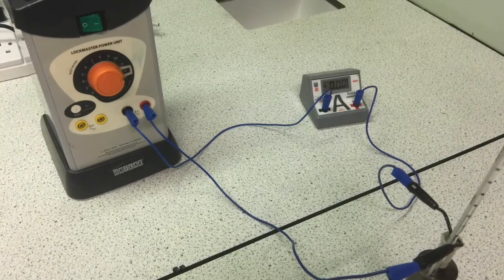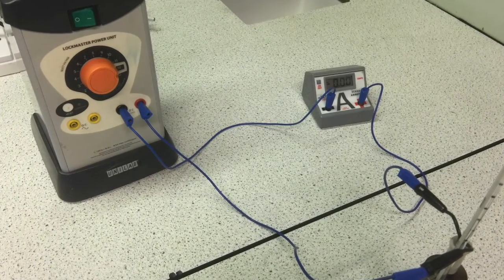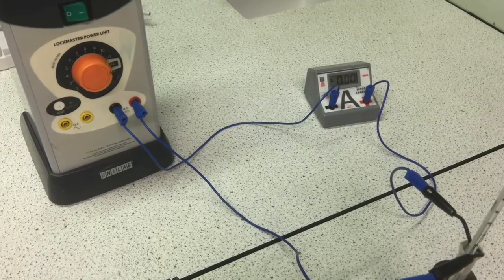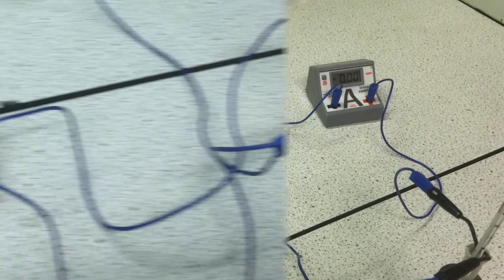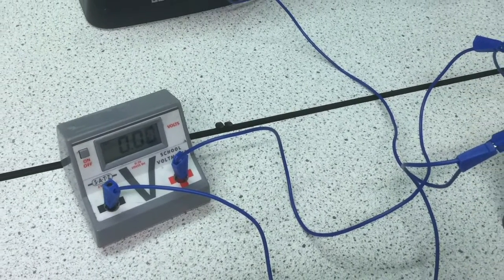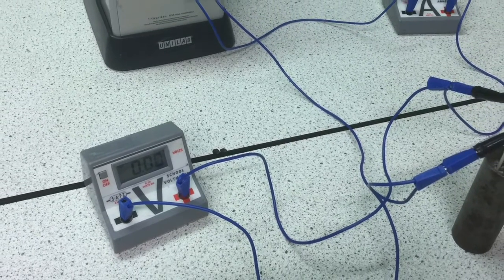This is the heater in series with the ammeter - you see it's a simple series circuit. Then we connected the voltmeter in parallel. The voltmeter goes across the heating element.